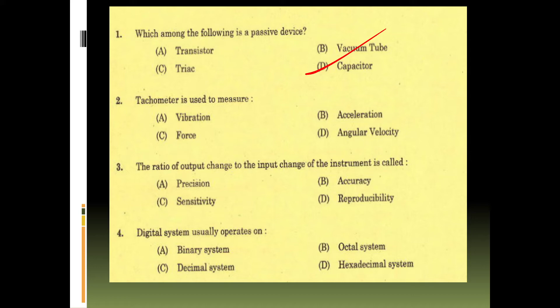Next question: tachometer is used to measure - vibration, force, acceleration, angular velocity. Tachometer is used to measure option D, angular velocity. Tachometer is a measuring instrument - what does it measure? Operating speed of engines in revolutions per minute. Engine speed is measured. What does the tachometer measure? Angular velocity of any spinning object. That is the measure of the tachometer. Option D, answer.